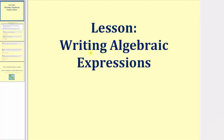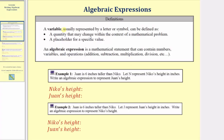Welcome to a lesson on writing algebraic expressions. Let's begin with two definitions. Let's define a variable in an algebraic expression. A variable, usually represented by a letter or symbol, can be defined as a quantity that may change within the context of a mathematical problem.